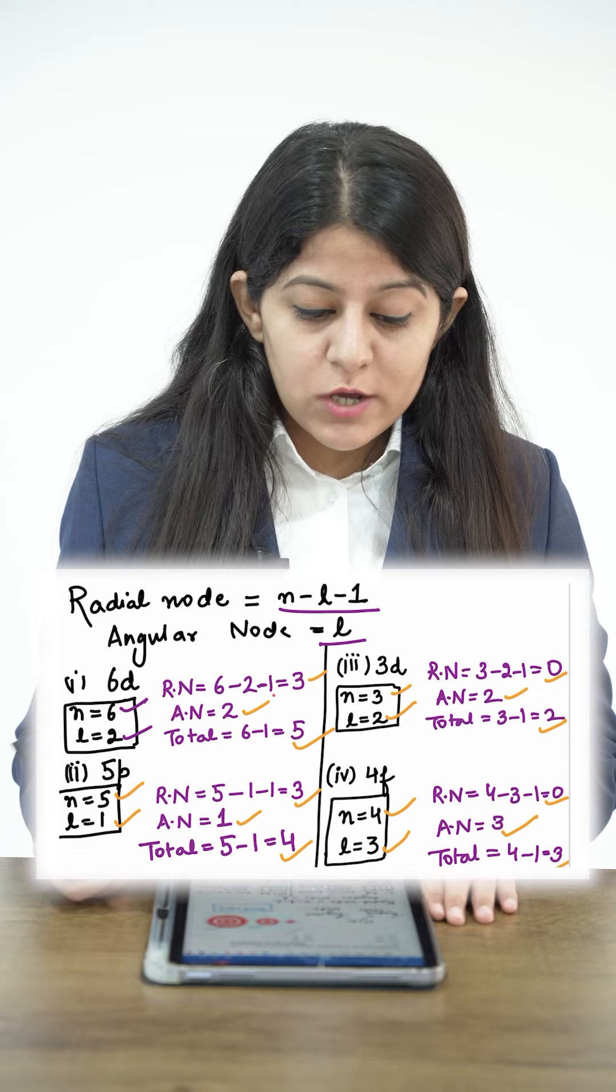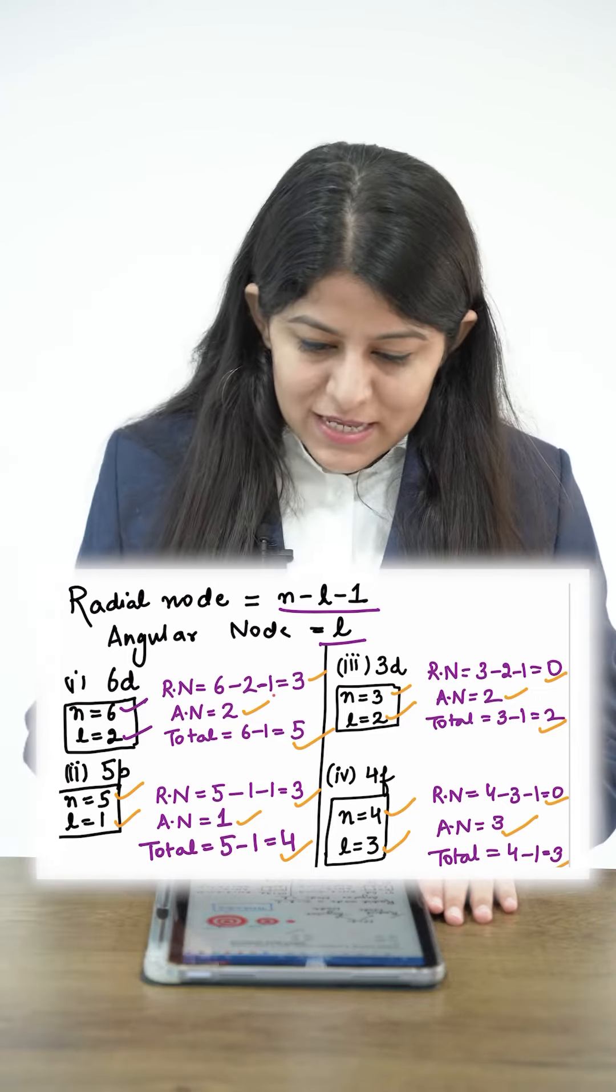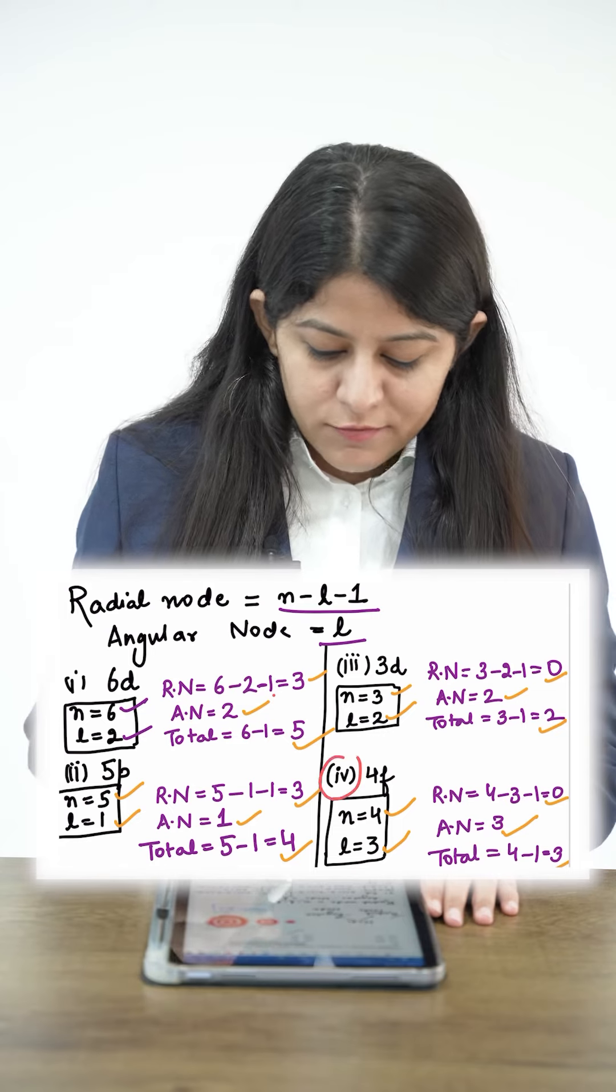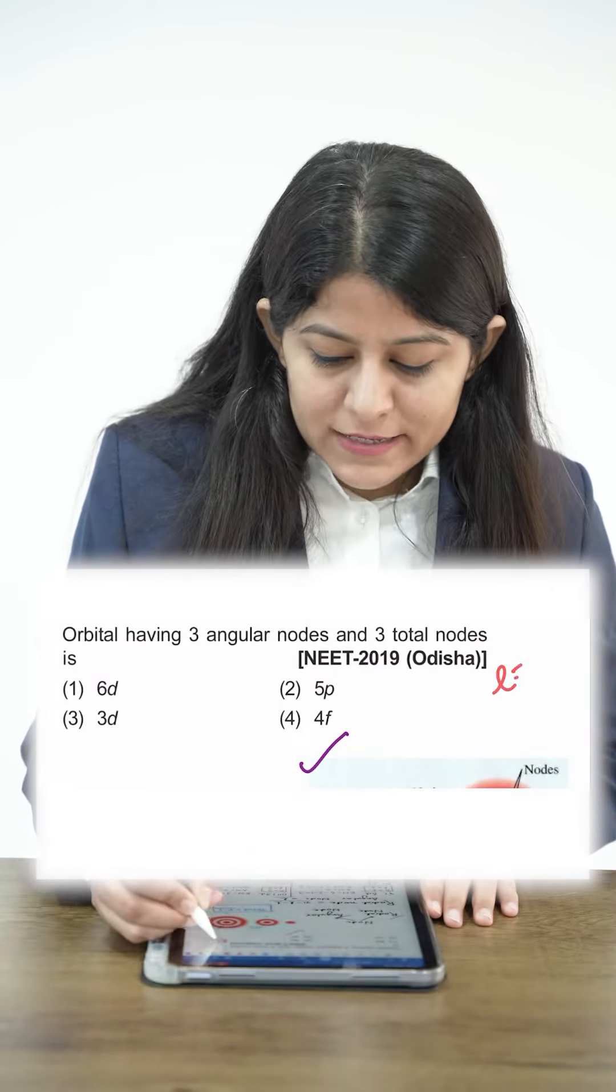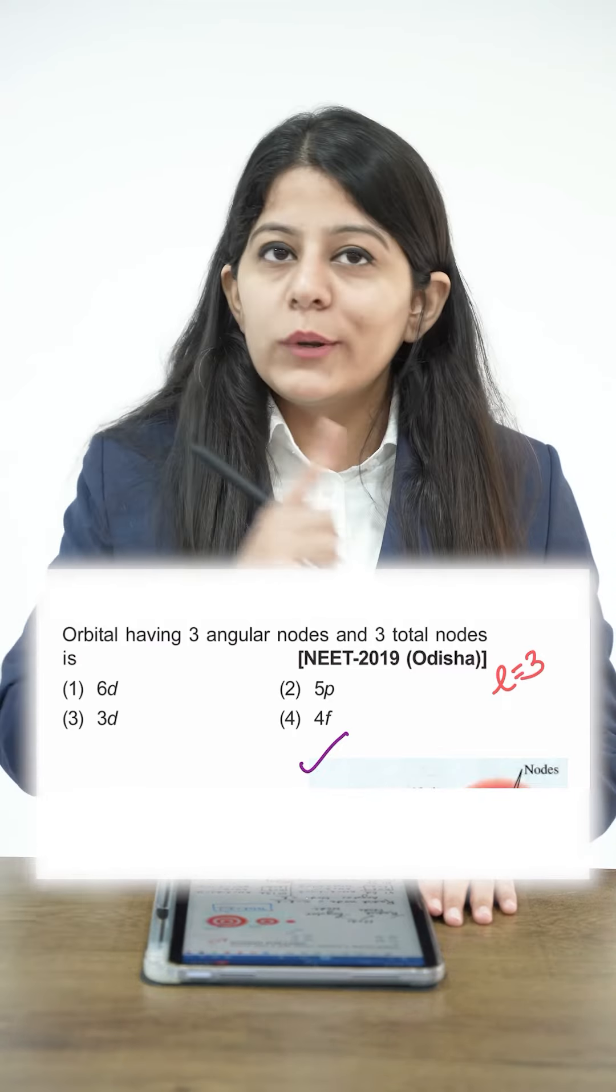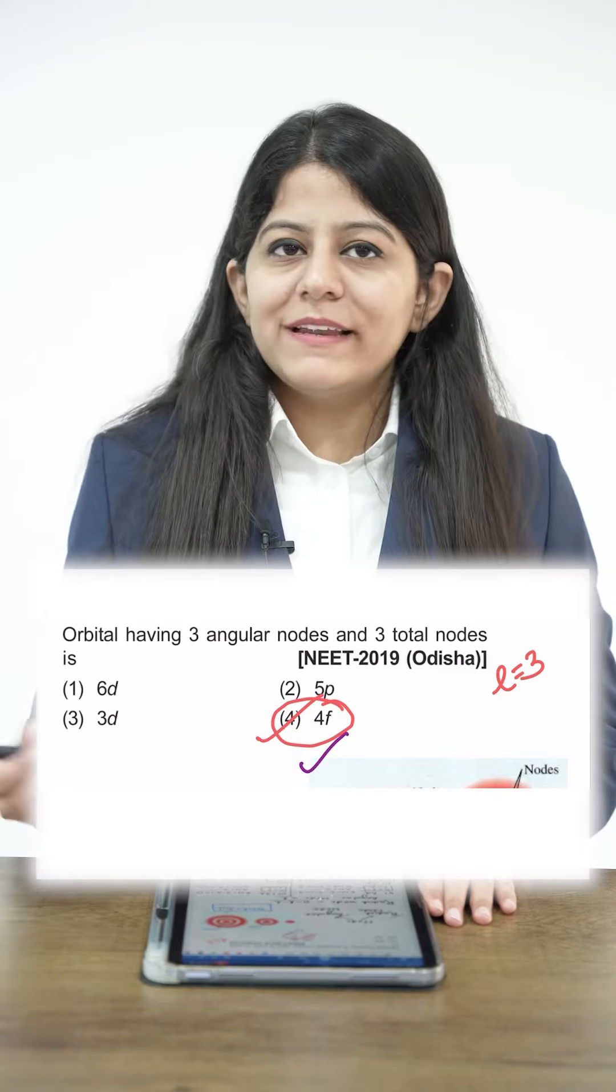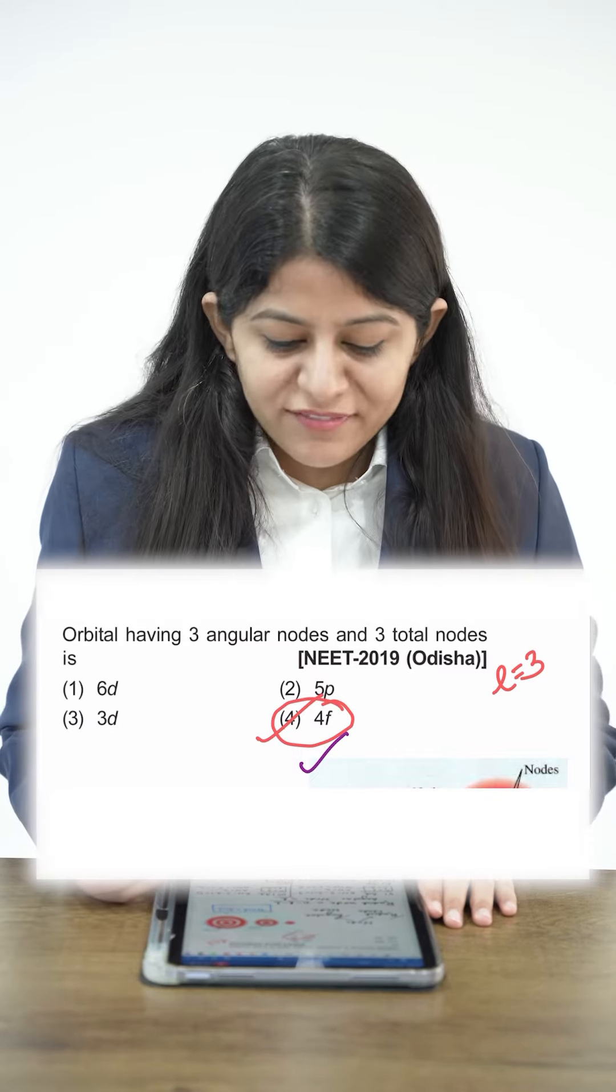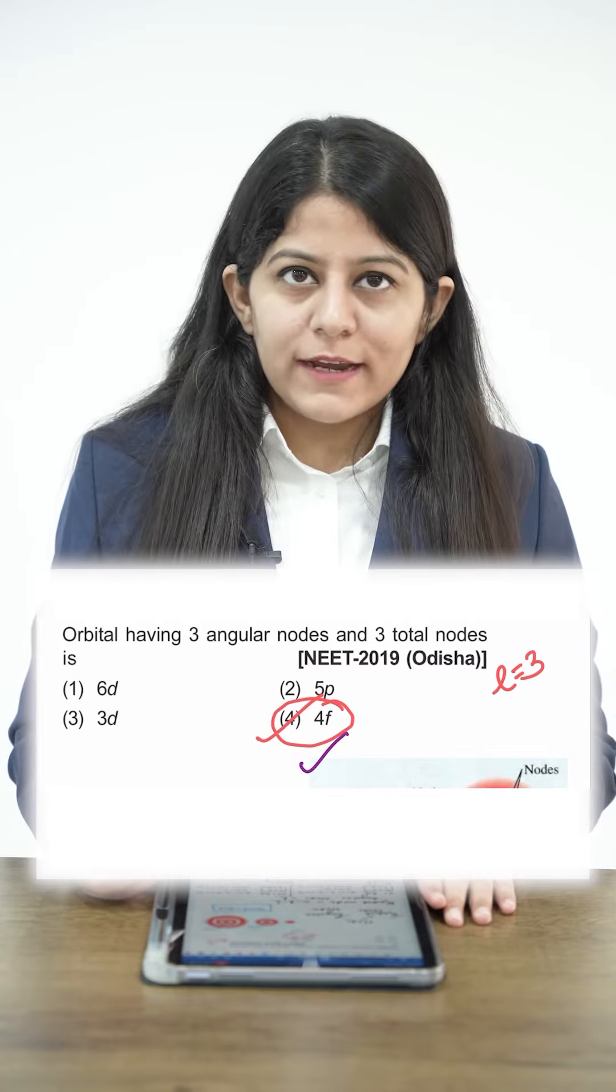Now the question was the orbital having 3 angular nodes and 3 total nodes. So you can see our correct answer is option number 4. Also, you can see that 3 angular nodes means L is 3. So L is 3 only for one option, that is 4f. So based upon that, you can simply tell the answer that 4f contains 3 angular nodes and it has 3 total nodes, right?